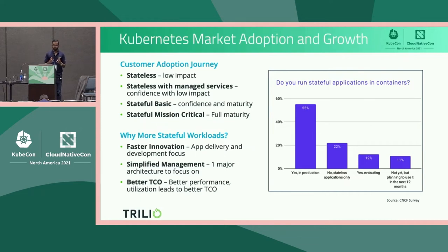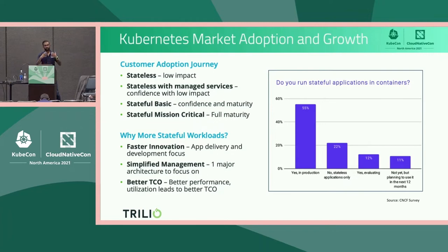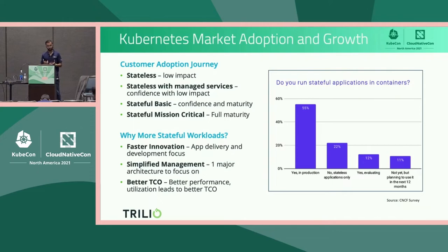Let's talk about the Kubernetes market adoption and growth. Kubernetes began, like any new technology paradigm, with a lot of stateless applications. Whenever you have a new technology, people are not going to put all their investments into it right away — they'll go step-by-step, starting with stateless workloads, then connecting those to databases outside, after which they'll bring in more stateful applications, basic ones first, and then their more mission-critical applications. If you look at the past from a virtualization perspective, that was the trajectory customers followed. Public cloud followed the same kind of trajectory, and hyper-converged infrastructure as well — you test it out first, then bring in your mission-critical apps.